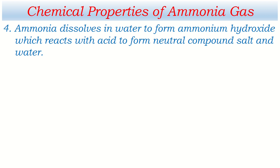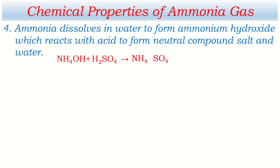Ammonia dissolves in water to form ammonium hydroxide, which then reacts with acids to form neutral compounds — salt and water. Ammonium hydroxide reacts with sulfuric acid to form salt and water in an acid-base reaction. Ammonium hydroxide is a weak base. The salt formed is ammonium sulfate, (NH4)2SO4, with the valency of sulfate (2) exchanged to ammonium.